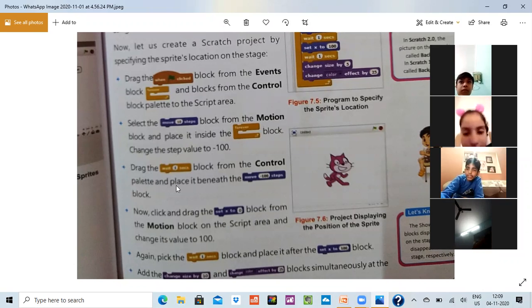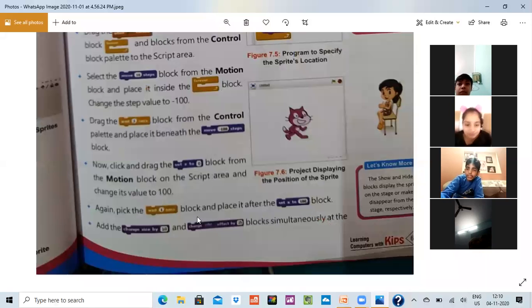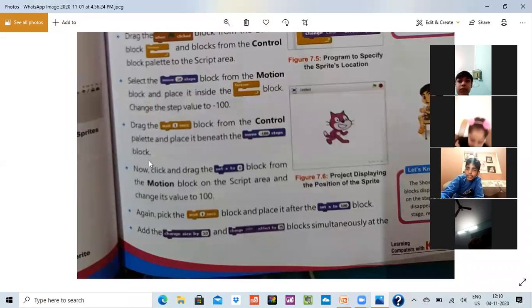Drag the block from the control palette and place it beneath the block. What you have to do? You have to click on the go button, Events. Then you have to use the control block palette. Control block palette aapke motions ke liye hota hai. Then you have to tell ki kitne steps kisi cheez ko move karna hai. So jitne steps aap daloge, jaise yaha aapne likha hai move minus 100 steps, so ye kaha tak move karega? Minus 100 tak move karega.